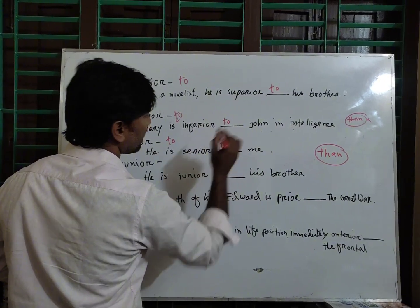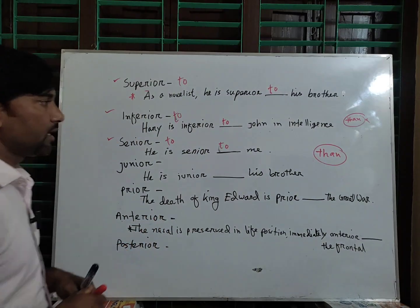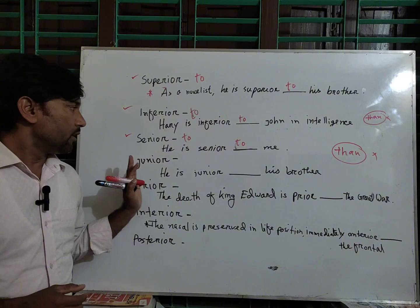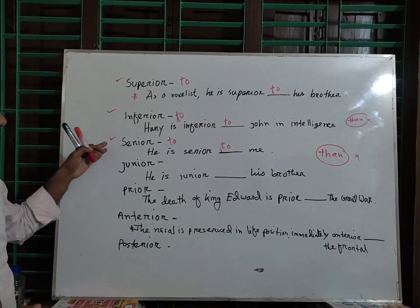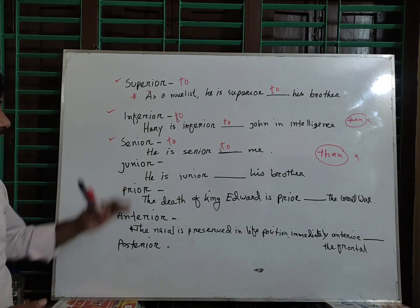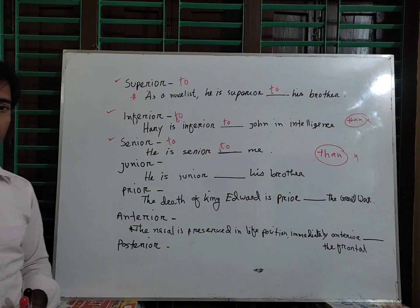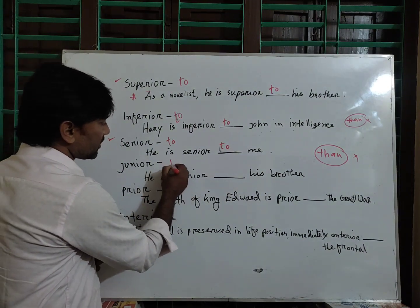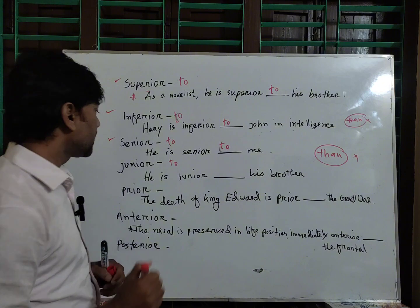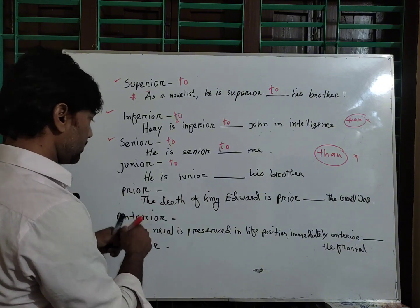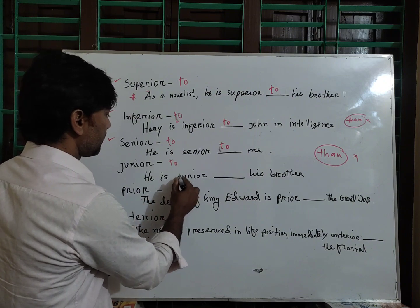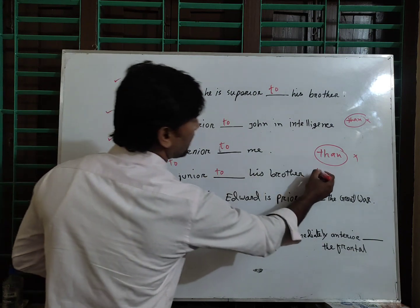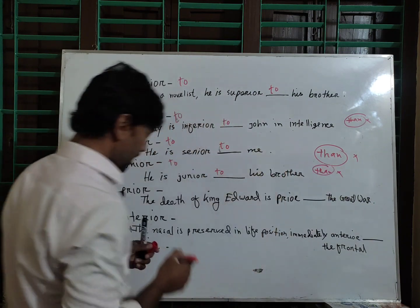Now junior, the opposite word of senior, which is junior. He is junior to his brother, not 'than'. 'Than' would be wrong; it should be 'to'.